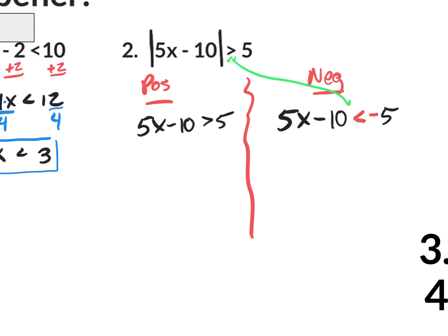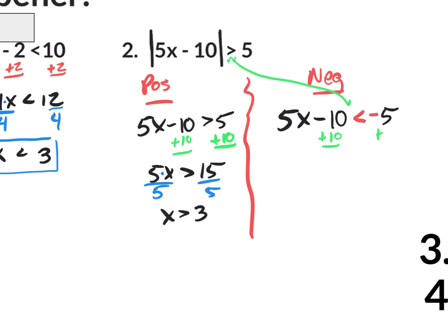Let's focus on the positive situation first. To get rid of that minus 10, you go plus 10. What you do to one side, do to the other. You end up with 5x is greater than 15, which is really saying 5 times x is greater than 15. To get rid of multiplication, you divide by 5 on both sides. You get x is greater than 3. Now for the negative situation — same deal. You get rid of the minus 10 first by going plus 10 on both sides. It says 5x is less than 5, so dividing by 5 on both sides, you end up with x is less than 1. You don't flip the symbol because you didn't divide by a negative.